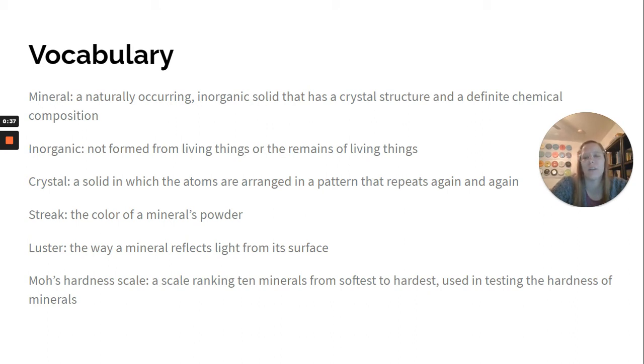Crystal: a solid in which the atoms are arranged in a pattern that repeats again and again. Streak: the color of a mineral's powder. Luster: the way a mineral reflects light from its surface.